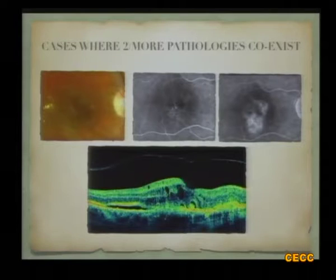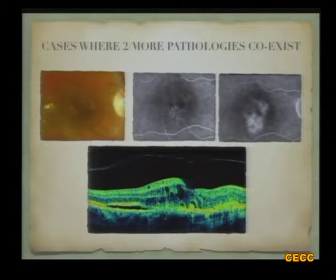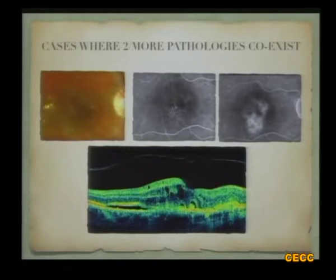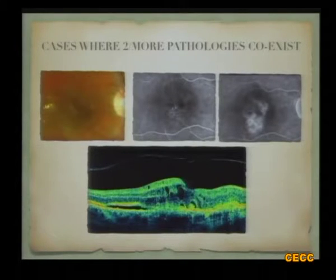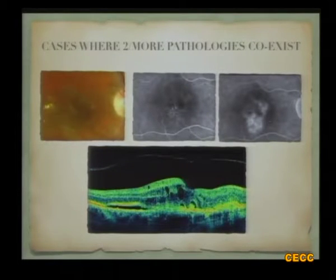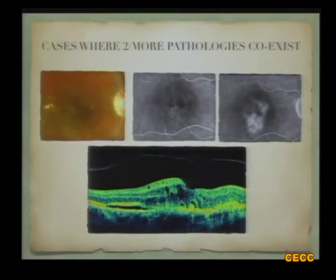In cases where two or more pathologies complicate diabetic macular edema — such as this patient who has age-related macular degenerative changes seen on both angiogram and OCT, and also telangiectatic vessels in the perifoveal capillary network indicating idiopathic perifoveal telangiectasia — imaging is necessary to interpret each condition separately and tailor therapy accordingly.